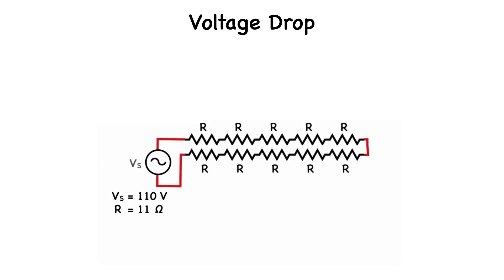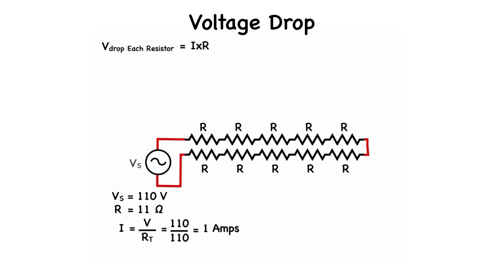Let's add eight more resistors and redraw the circuit to look like this. The current in the circuit will now be a function of the source voltage divided by all of the resistance, which is made up of 10 eleven-ohm resistors. Using Ohm's law, the current equals 110 volts divided by 110 ohms, or one amp. We can easily calculate the voltage drop across each resistor by multiplying the current times the individual resistance of 11 ohms, which works out to 11 volts.